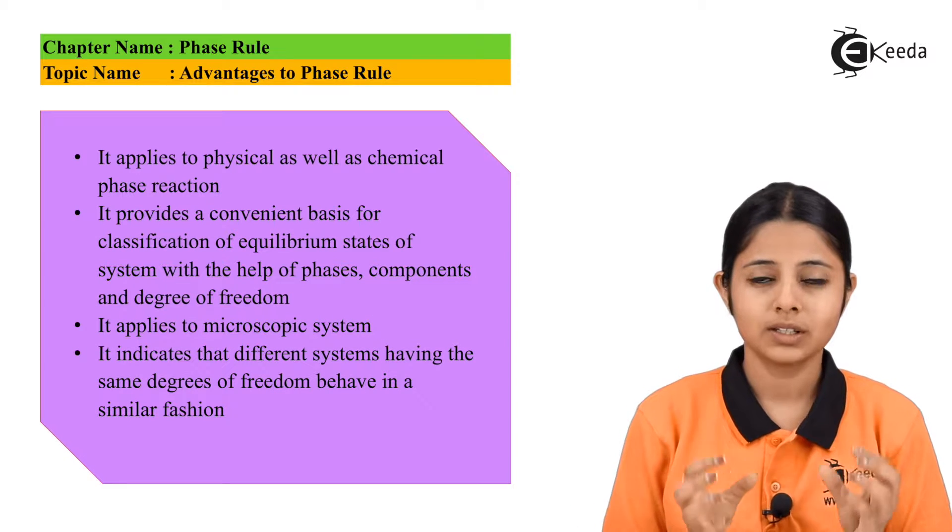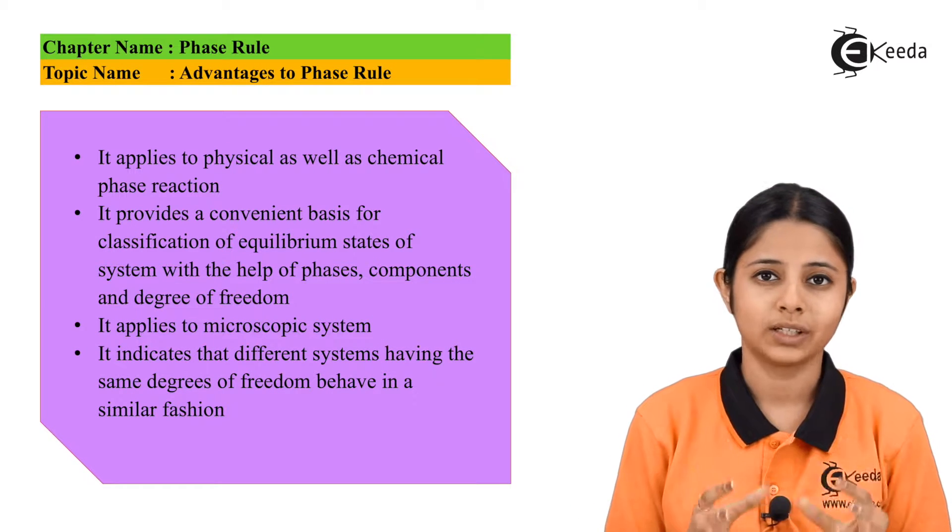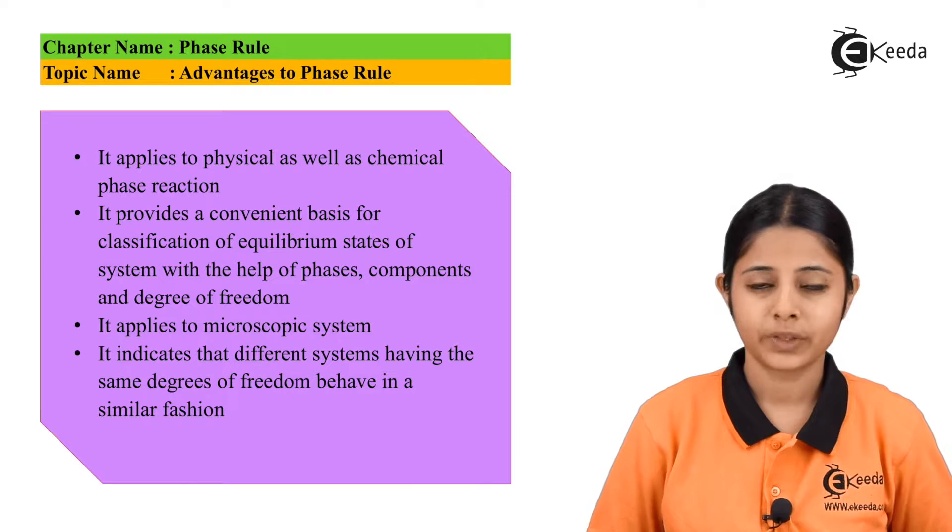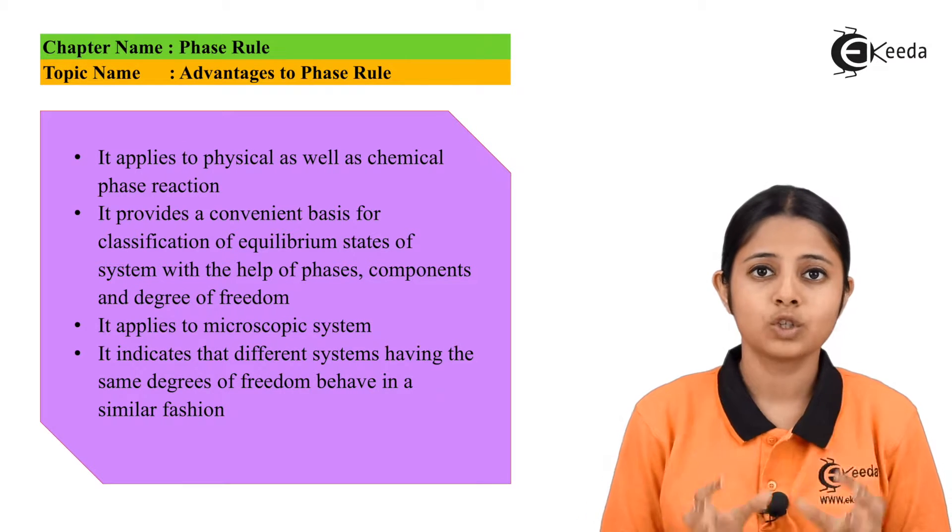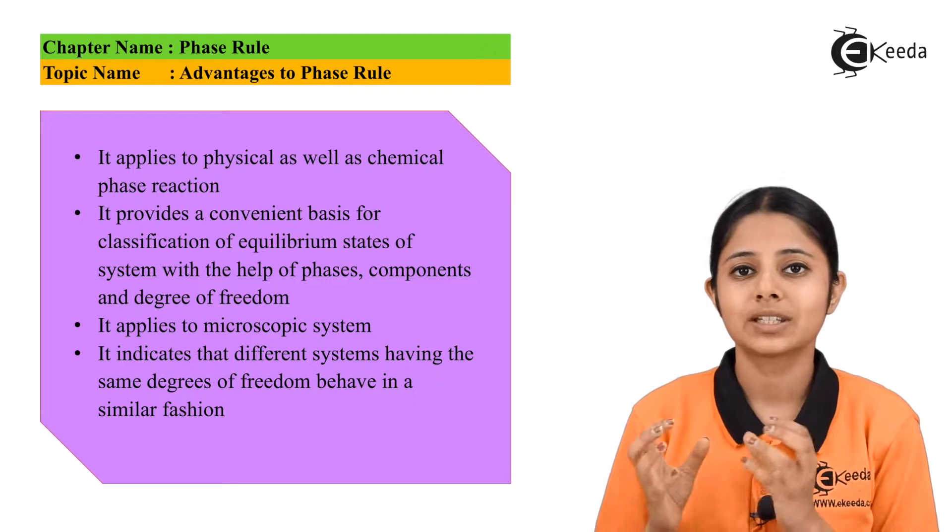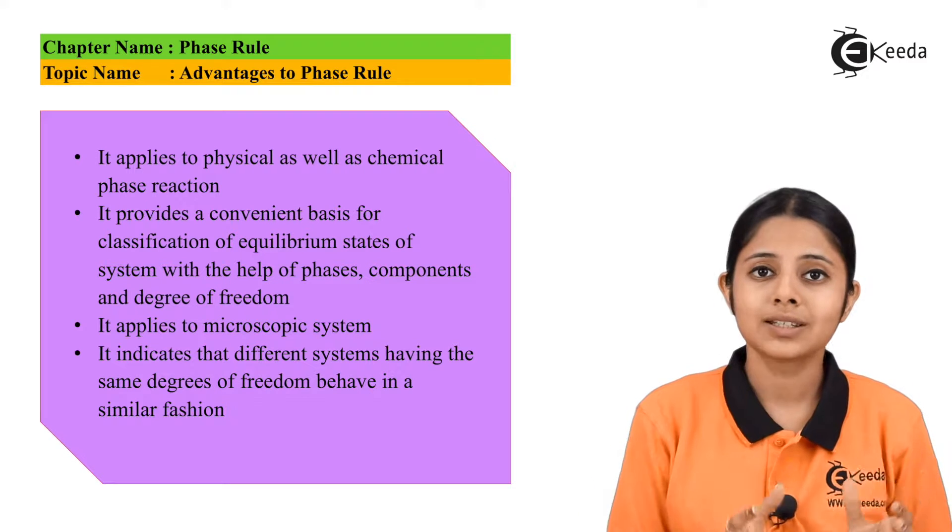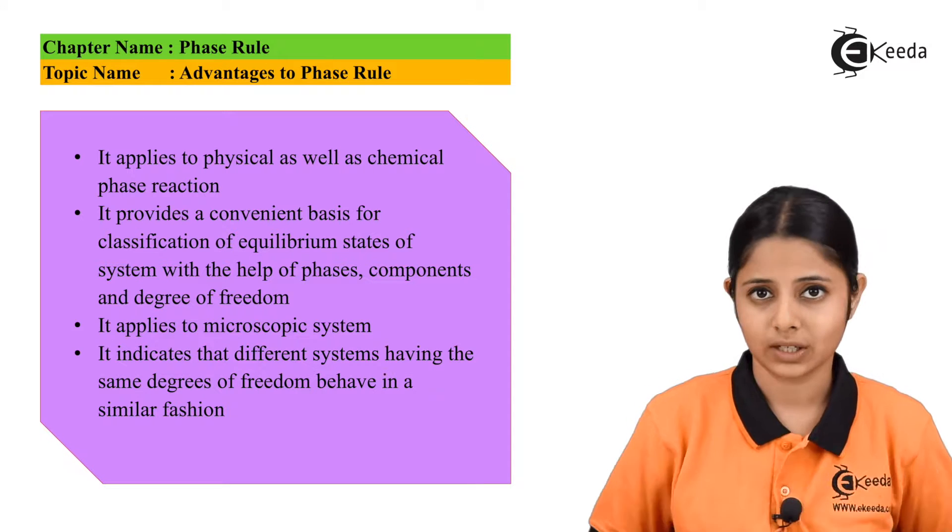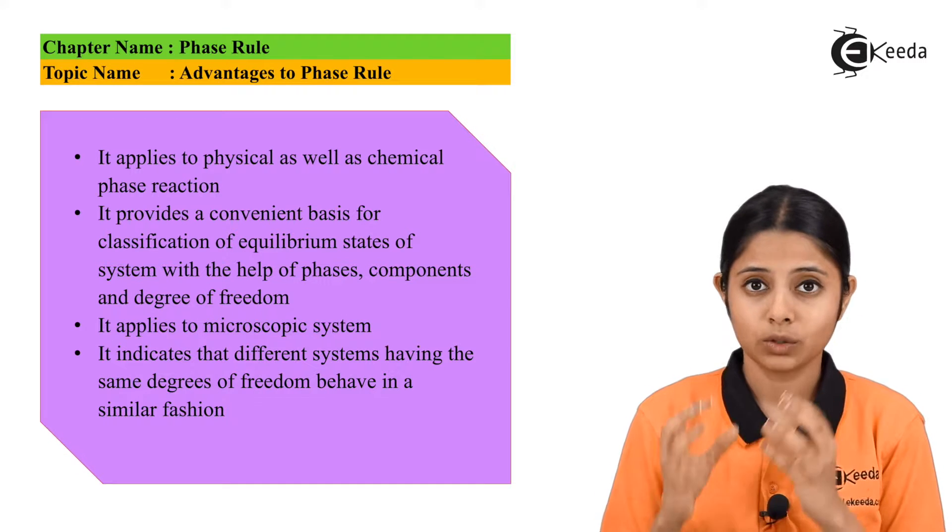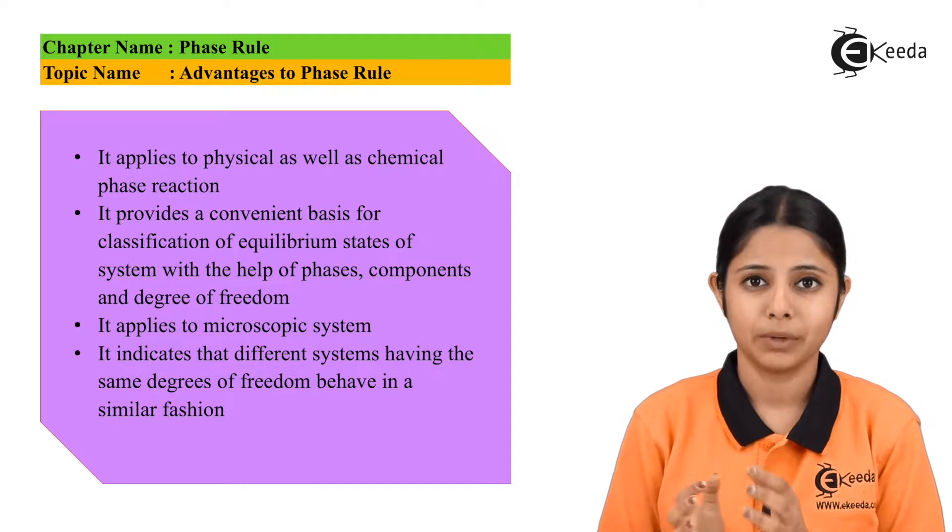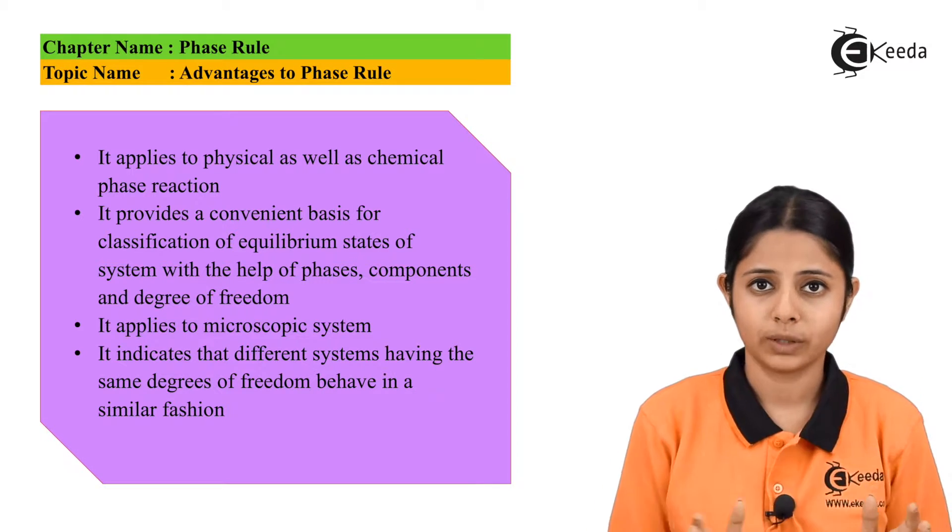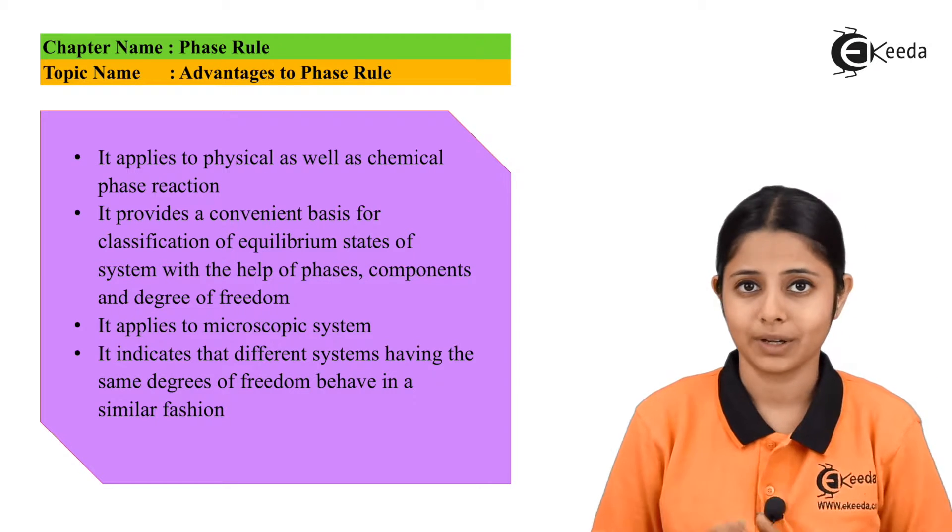So now this phase rule studies about the equilibrium points of the heterogeneous systems. Let us see all the advantages of the phase rule. The first one is it applies to both physical systems as well as chemical systems. Physical systems are those systems wherein two reactants or two components are just mixed physically. Chemical systems are those systems where they may react chemically. But phase rule is used to find out the equilibrium in both of them, the physical systems as well as the chemical systems.